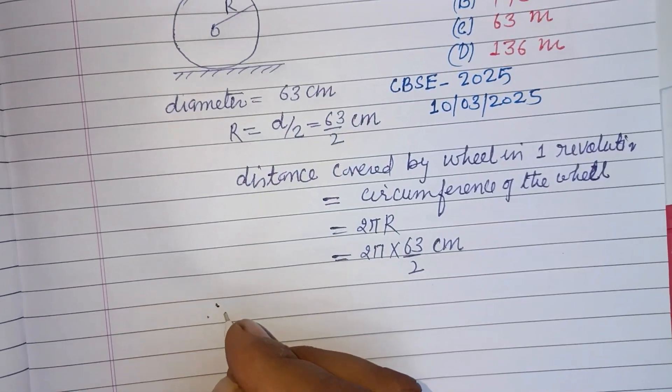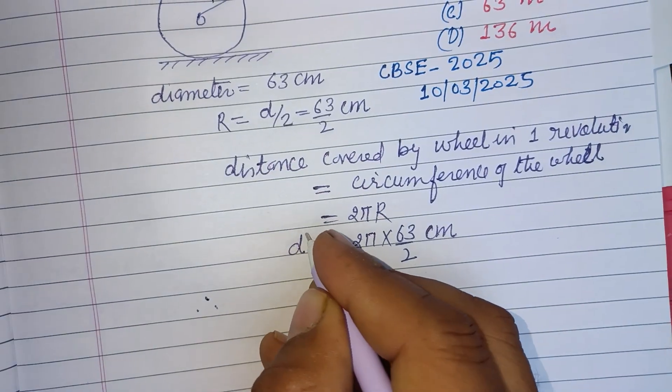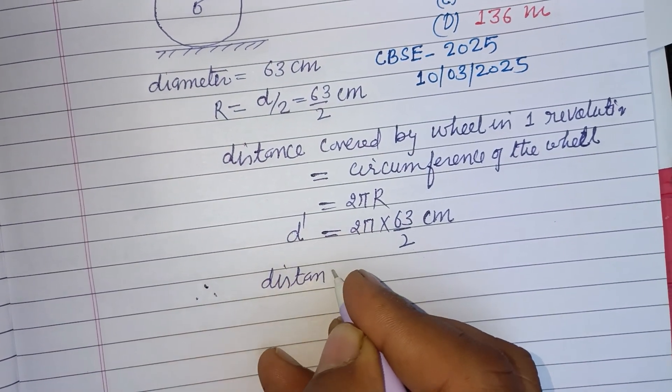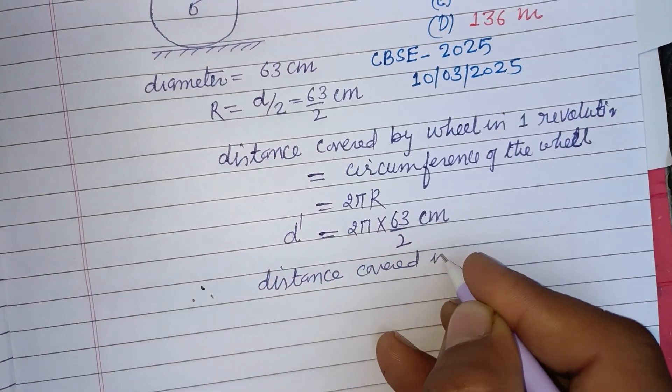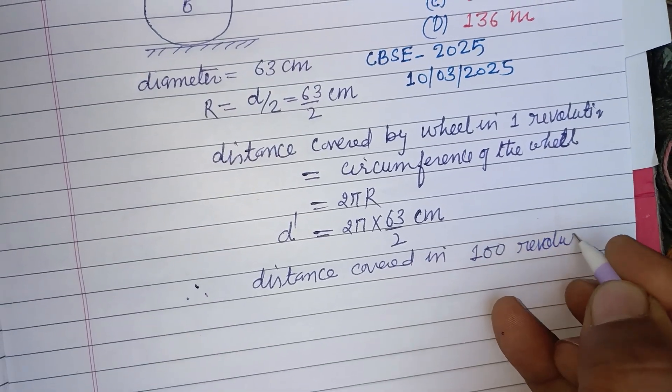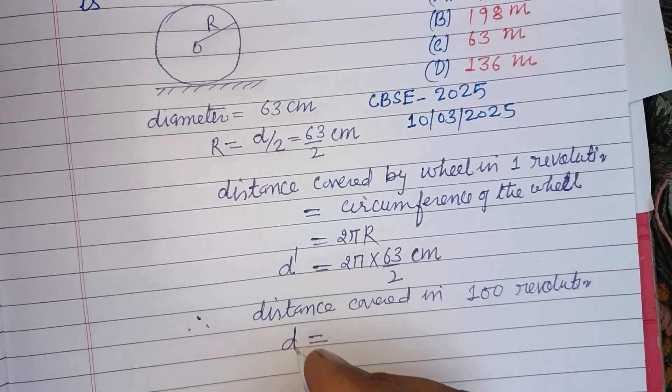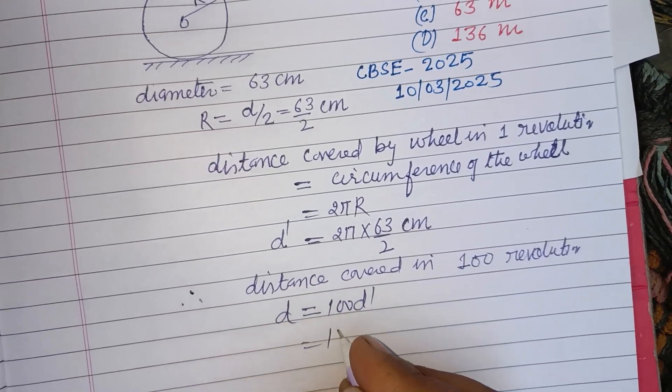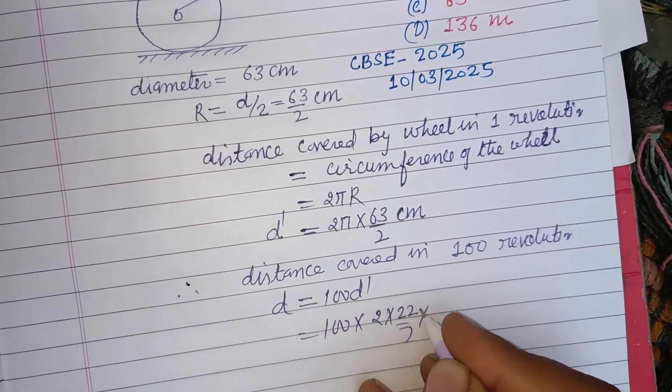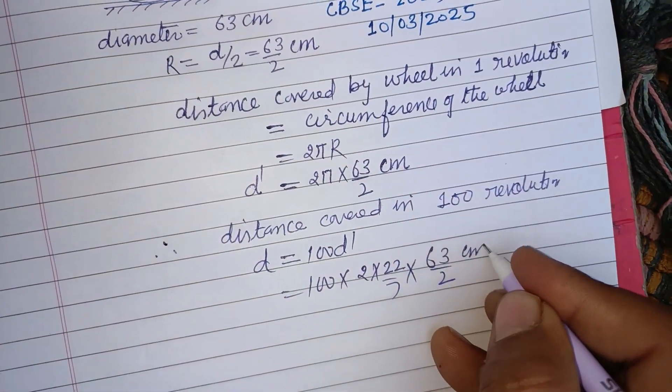Therefore, distance covered in 100 revolutions is d equals 100 into d dash, so 100 into 2π. π is 22 over 7, and r is 63 by 2 centimeters.